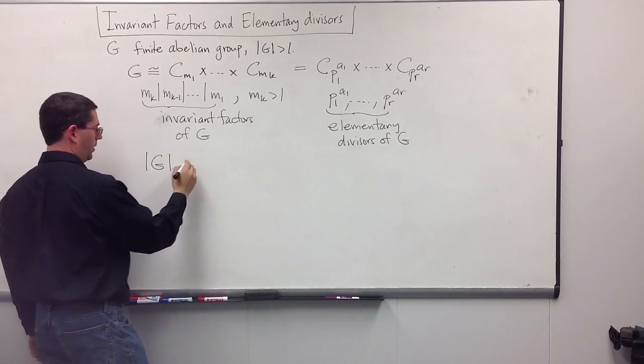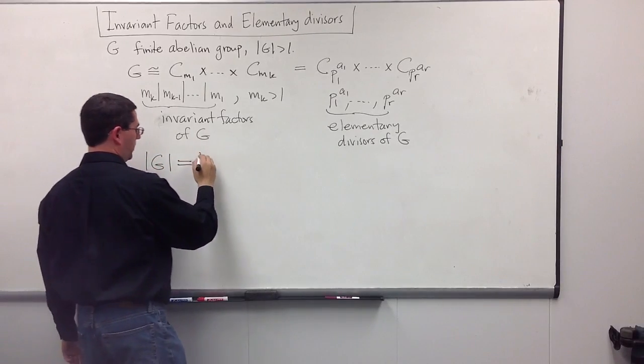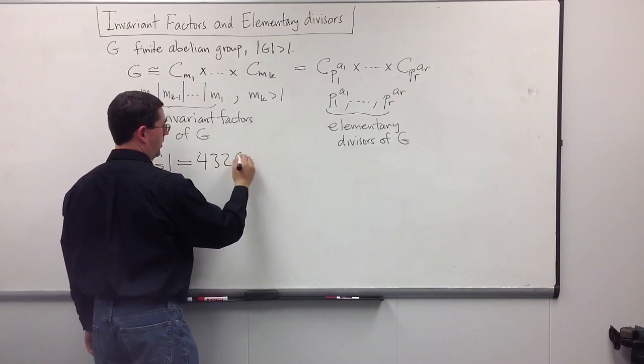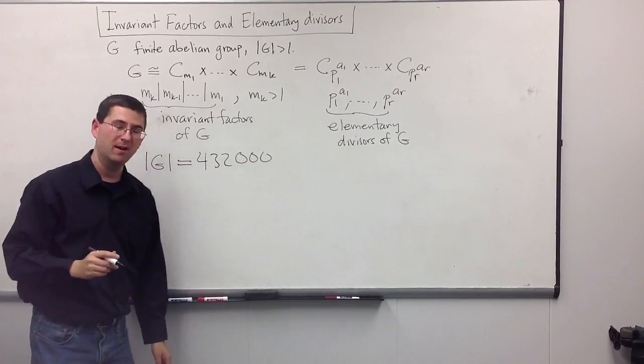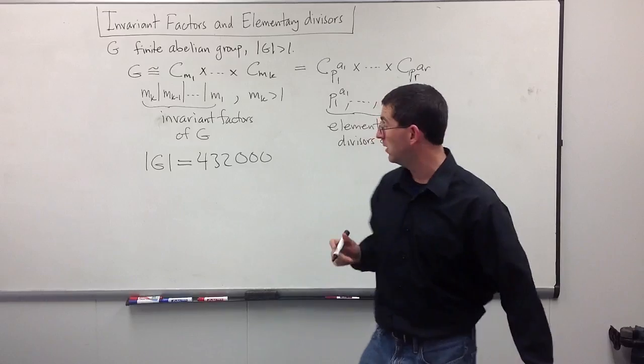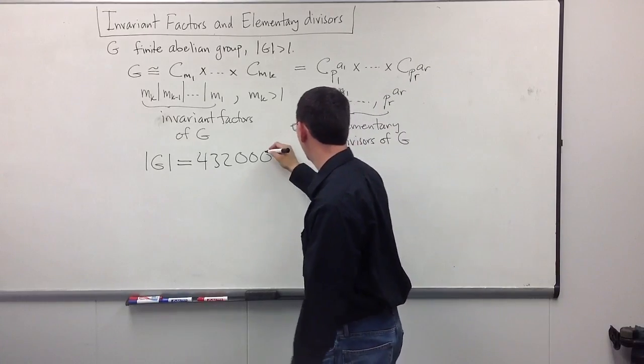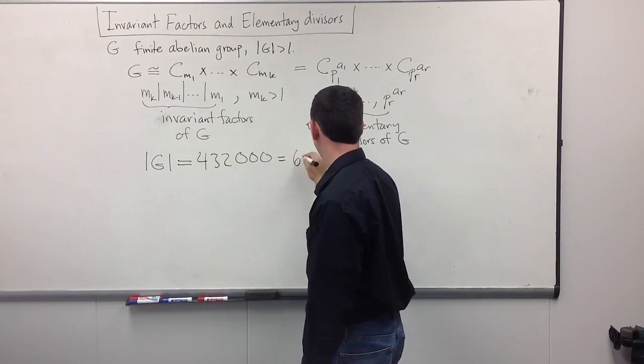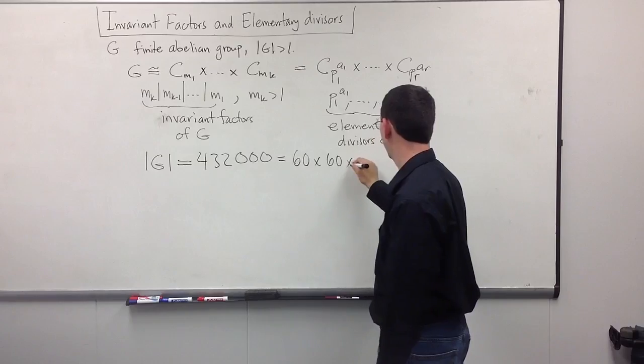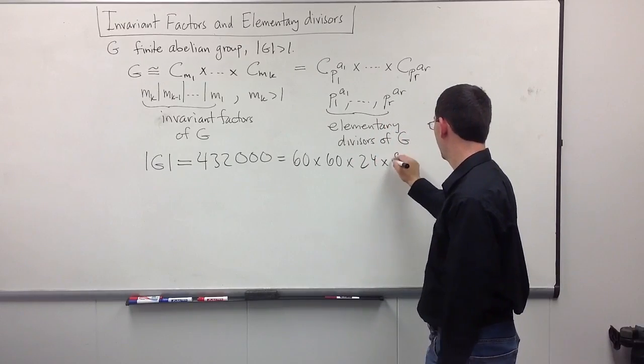We're going to start with some group. And the order of the group is going to be, say, 432,000. That's the number of seconds in five days. So, in fact, I know this is 60 times 60 times 24 times 5.